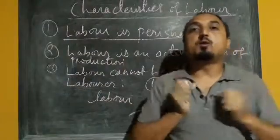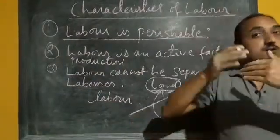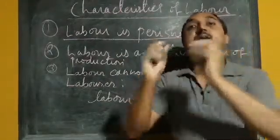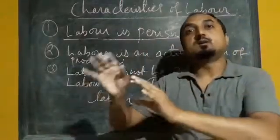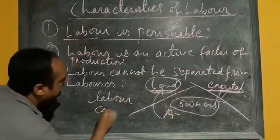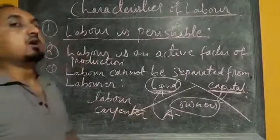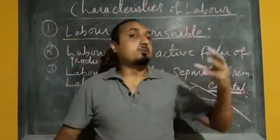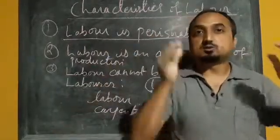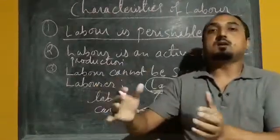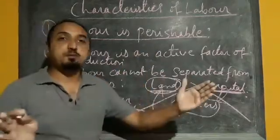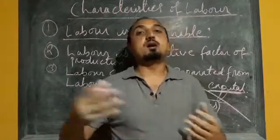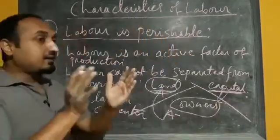We cannot make labour and labourer into two parts. Suppose I am one of the workers — I cannot be separated. My talent, my knowledge, my experience cannot be separated from me. Whenever I am going to contribute to any kind of production, I have to be physically present there. For example, let's consider a carpenter — the one who is making furniture. That carpenter cannot stay at home and provide his knowledge to somebody else to make the furniture. So carpenter and his talent cannot be separated. Labour is the amount of effort — physical or mental — provided by the labourer in any productive activity.